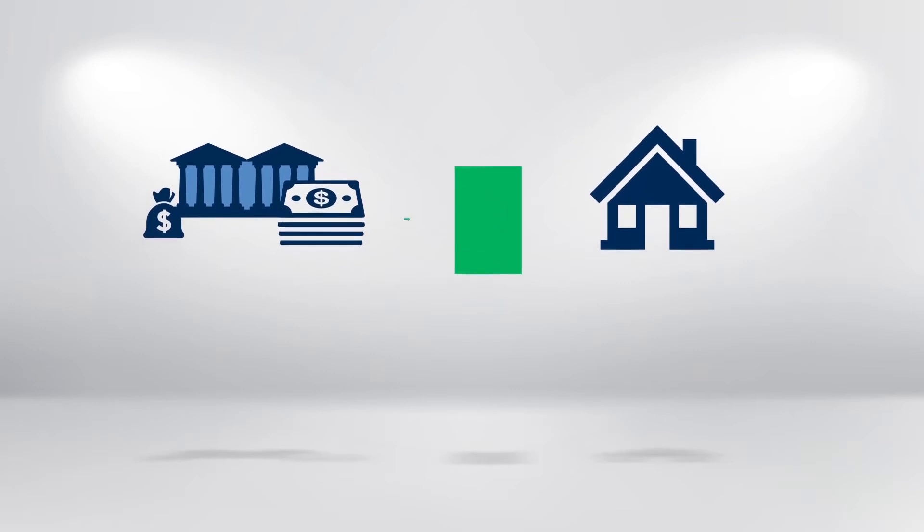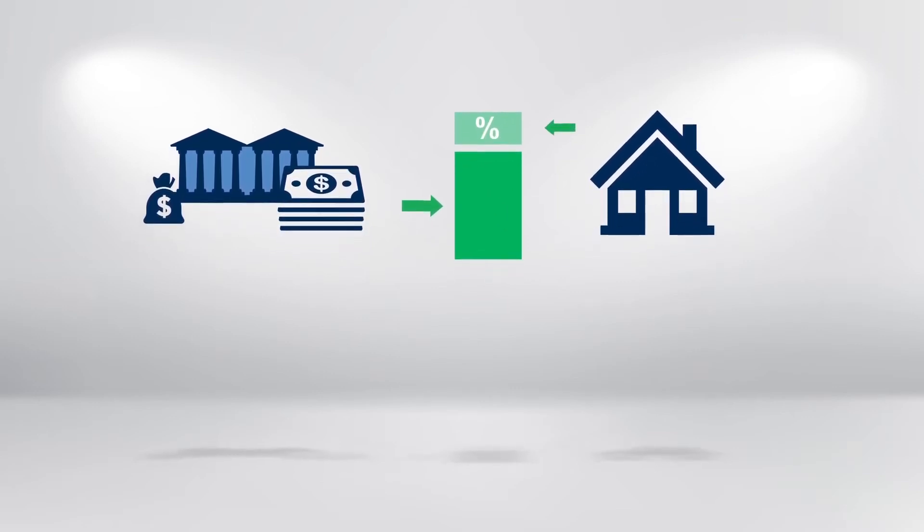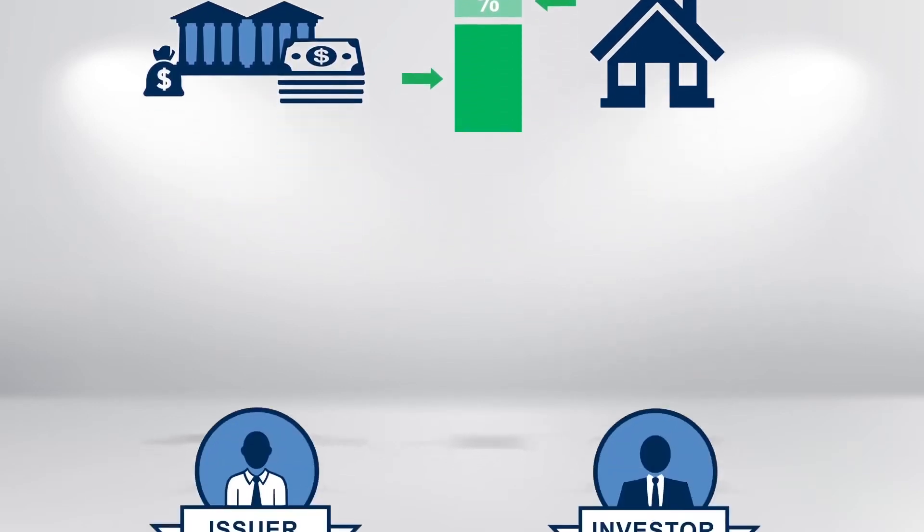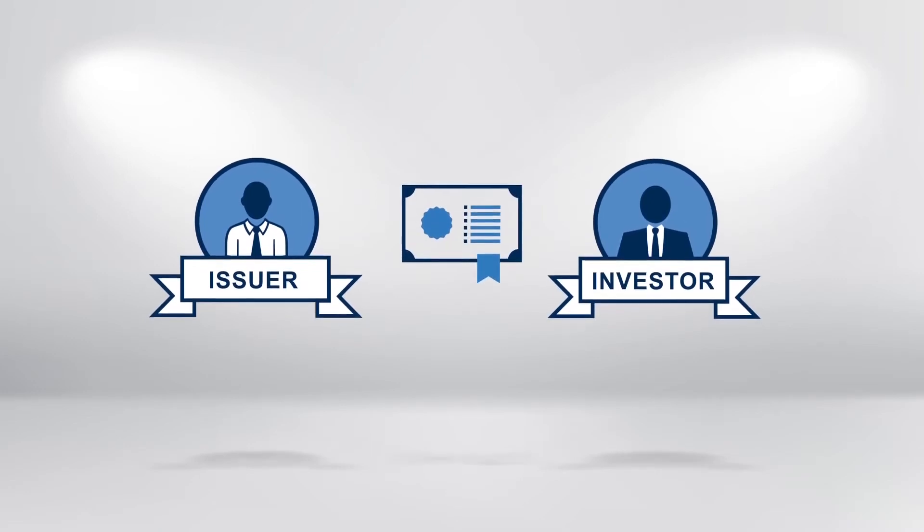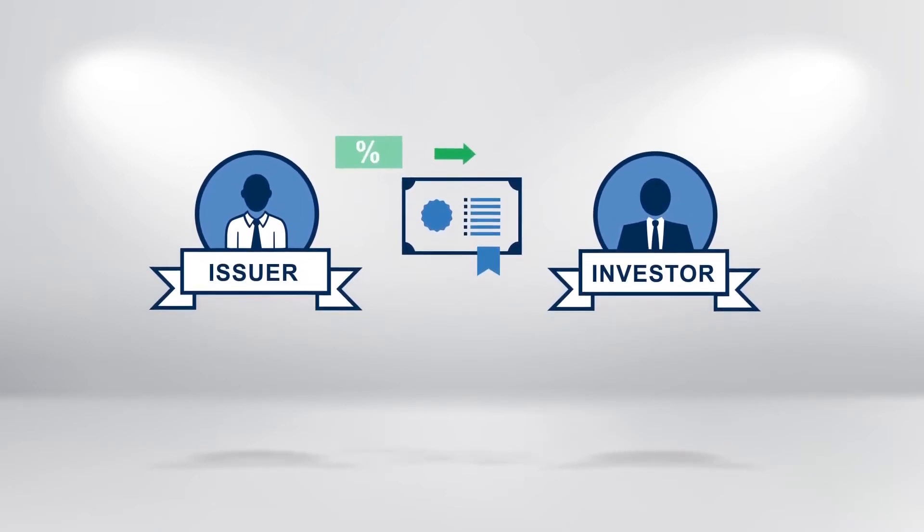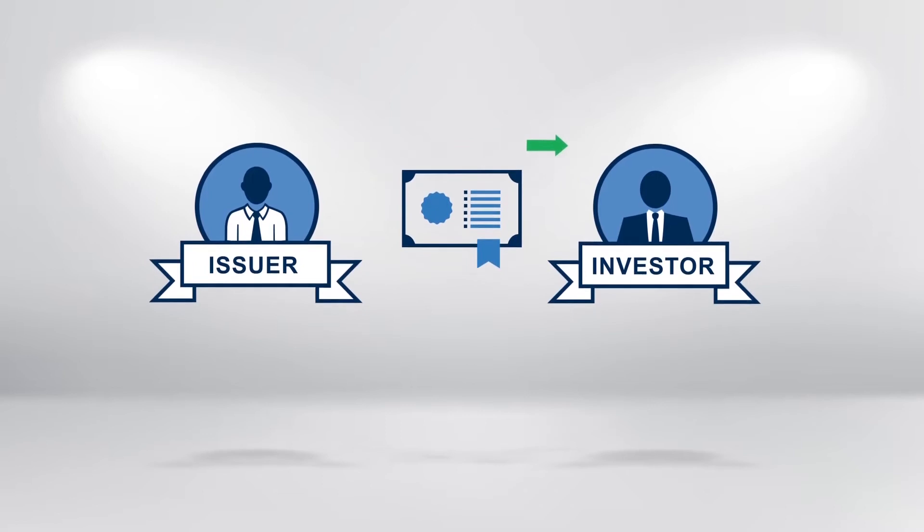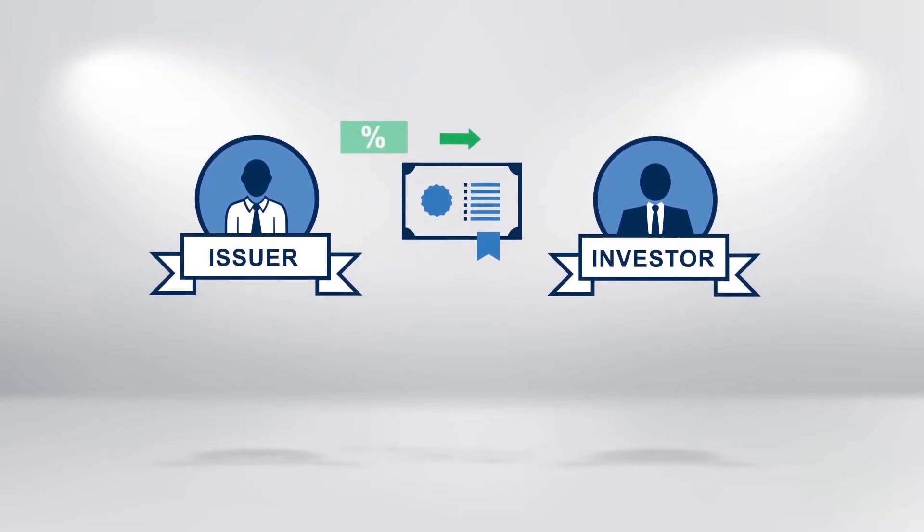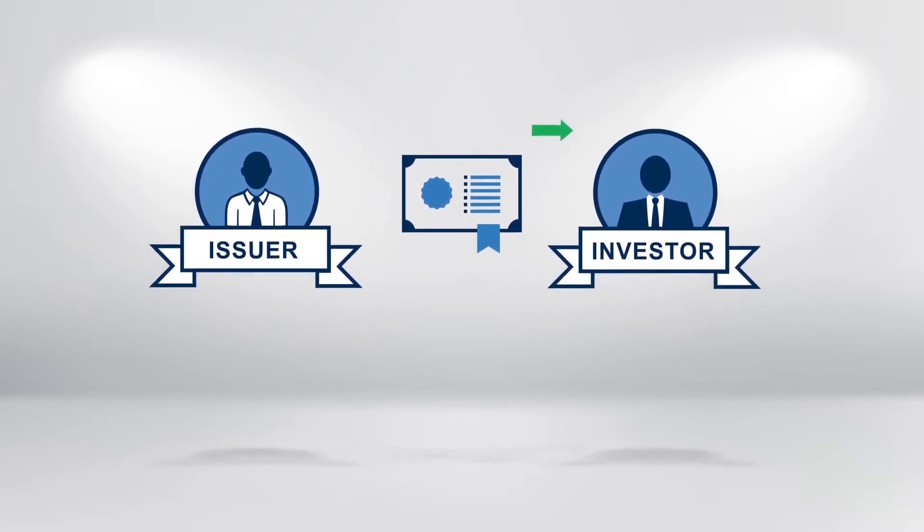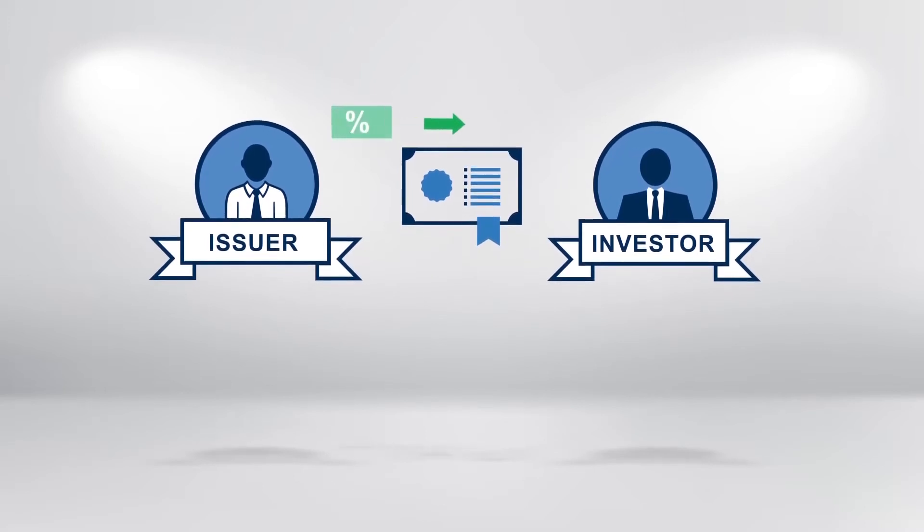If you take out a mortgage, you pay interest to the bank on top of your loan amount. And borrowing money by issuing a bond also doesn't come free. The issuer will pay interest on the bond, also known as the coupon, at fixed intervals to the investor.